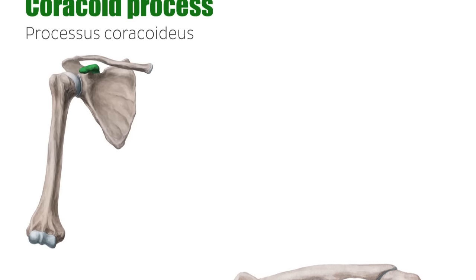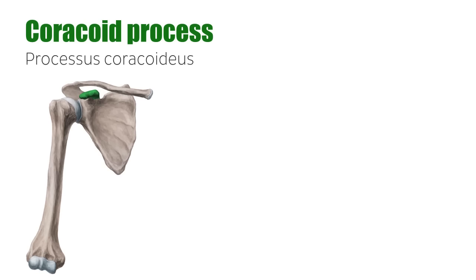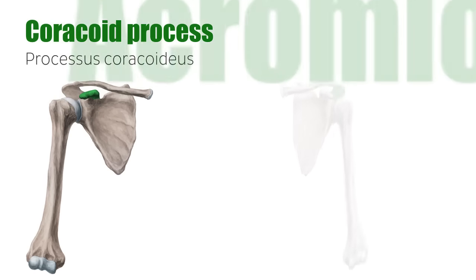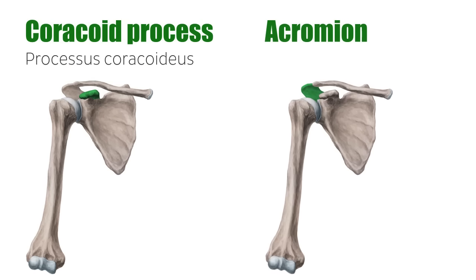Another major feature is the coracoid process, which, with the acromion, are two important projections of the scapula that serve as attachment points for ligaments and muscles. Not to mention that they protect some of the more fragile structures found on the shoulder joint.